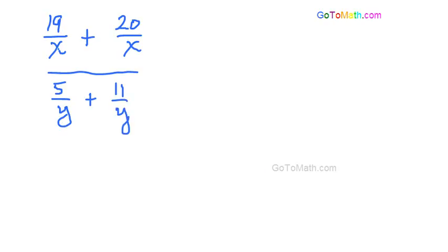We'll go ahead and add both those fractions together. That's going to be 39 over x, and this will be 16 over y. We have common denominators, so we just rewrite it as you can see here and add the numerators.